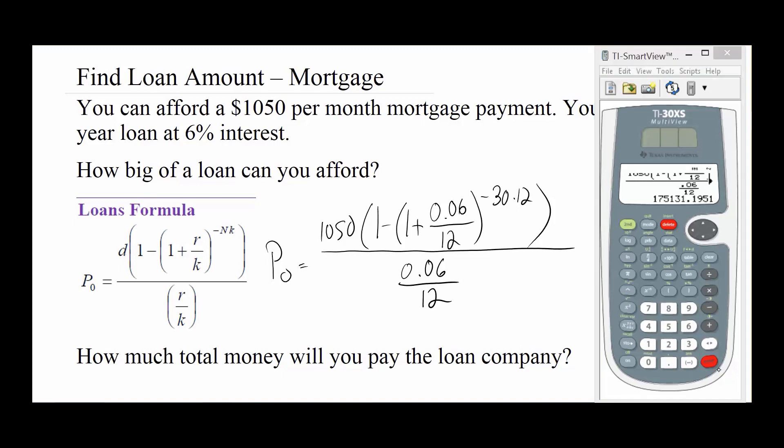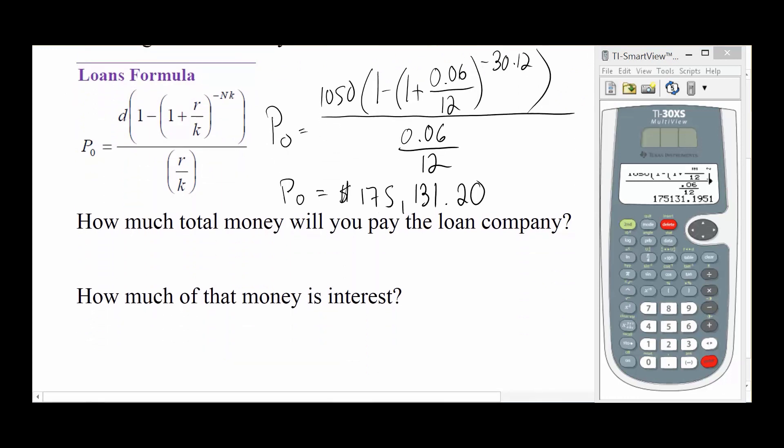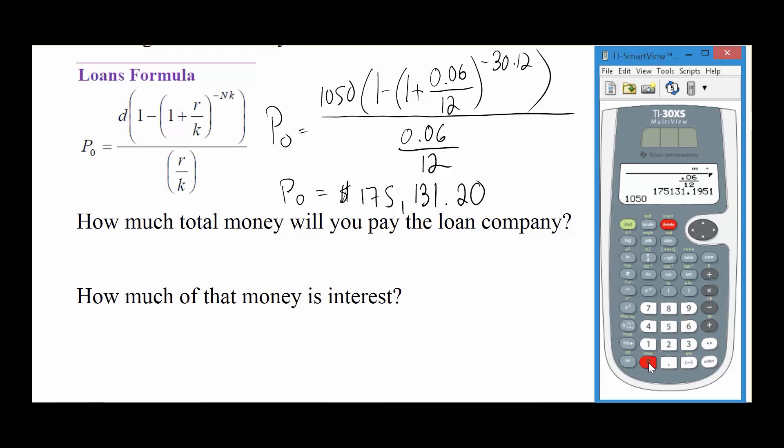we can afford a house that costs $175,131.20. That's what we can afford. So what we're going to look at now is we're going to look at how much total money are we paying our loan company, our bank here.